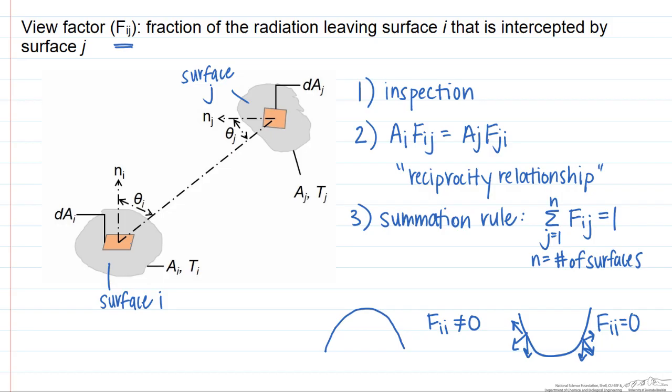One thing to remember is that the reciprocity rule only applies to two surfaces, while the summation rule applies to an enclosure, whether it's two, three, or more surfaces.